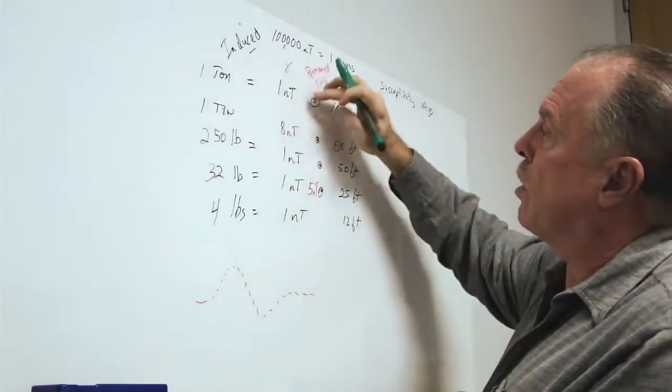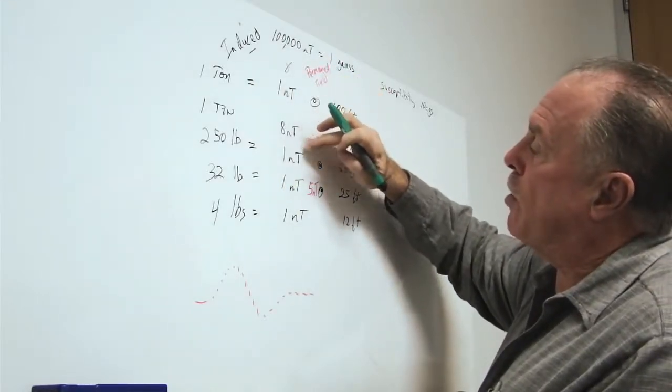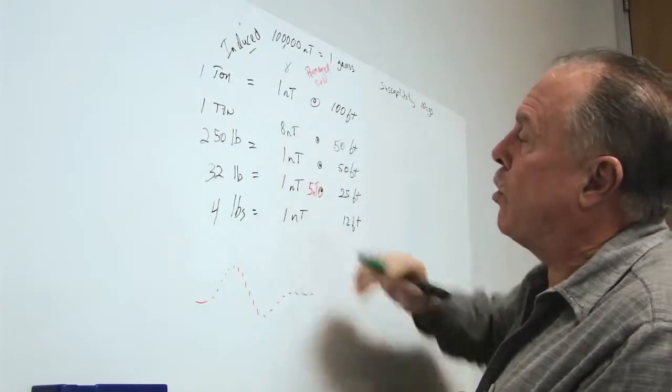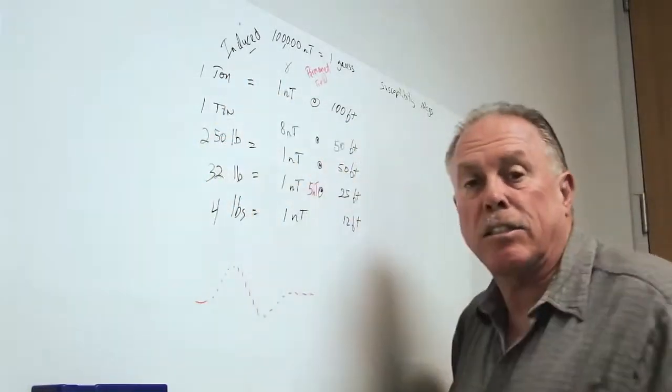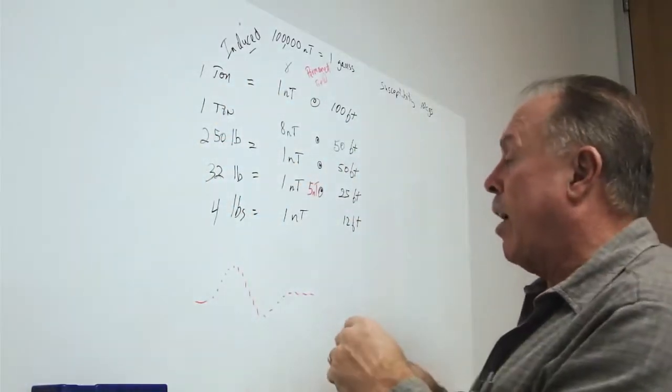And so the induced fields give us a fixed distortion based on mass and distance, a relationship that I characterized as inverse cube.